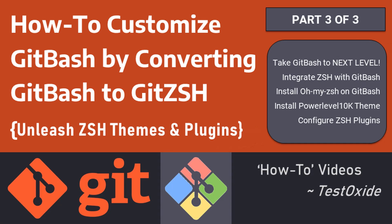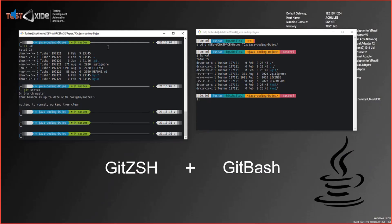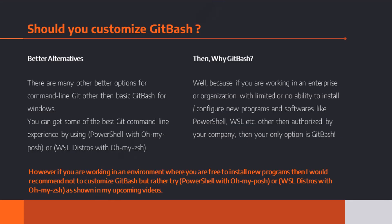Hello guys, welcome to the third and last part of customizing git bash. In this part, rather than customizing git bash, we would be transforming git bash into git zsh. Yes, that's right — we'll be converting our git bash into git zsh and unleashing all the zsh goodies.